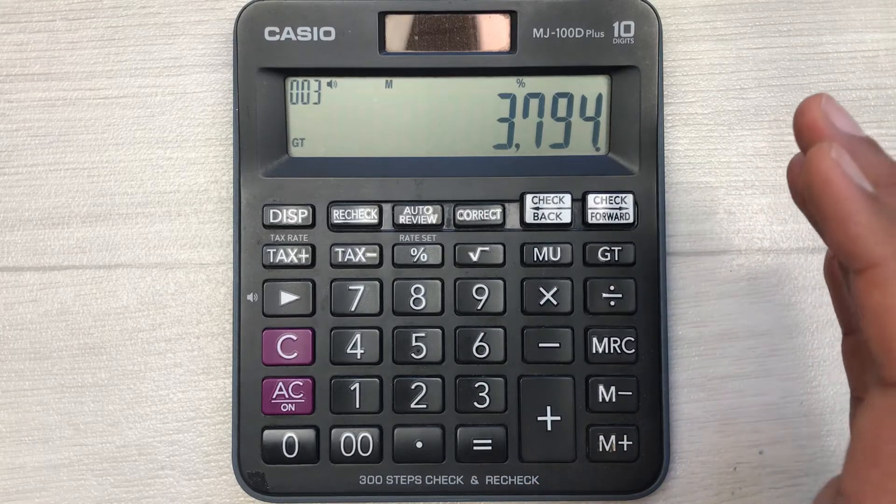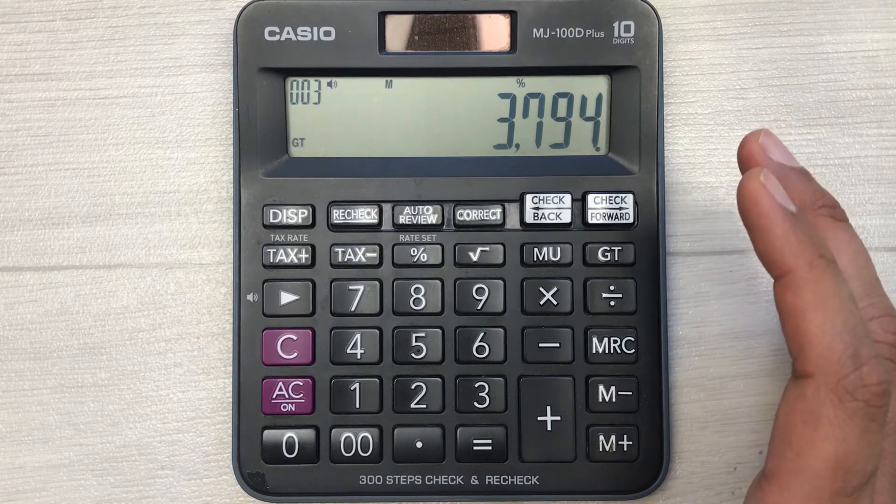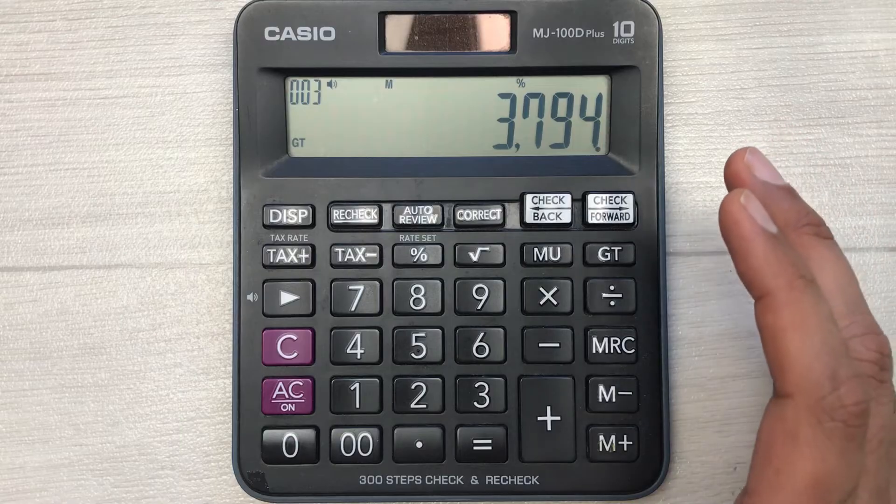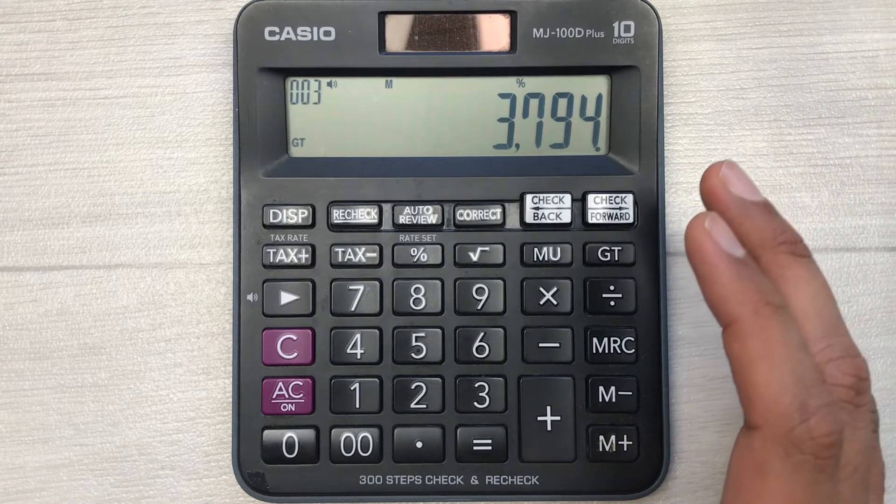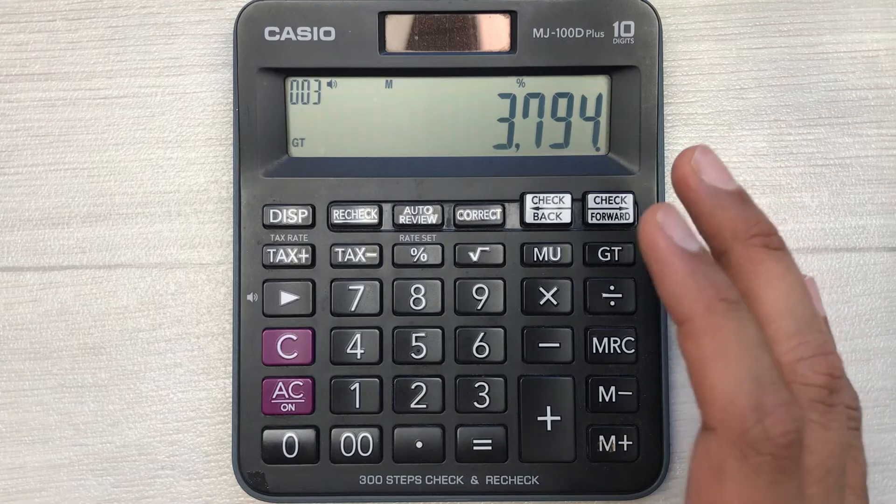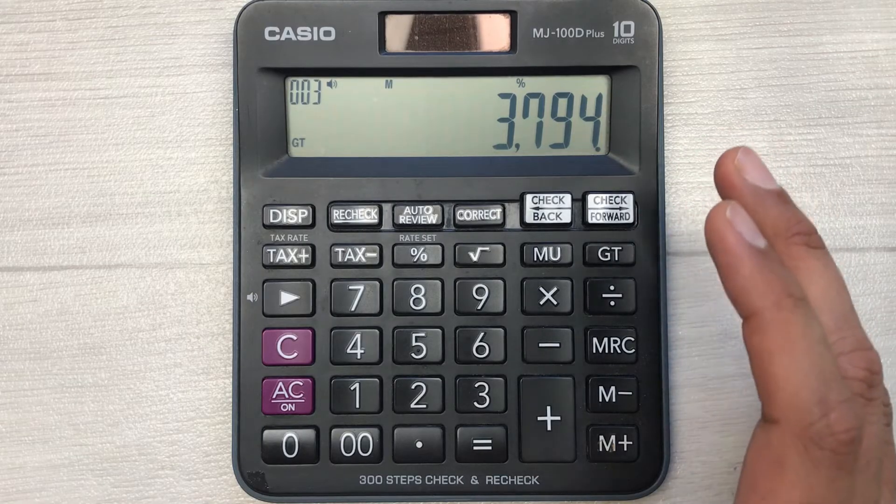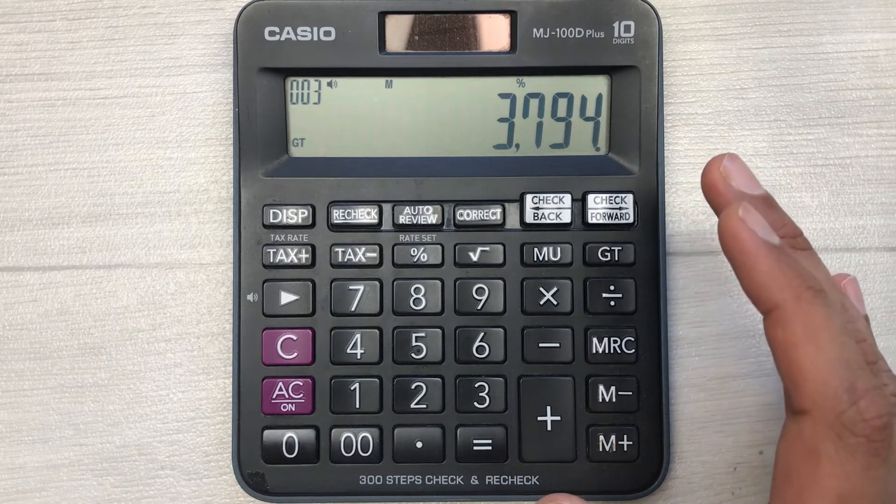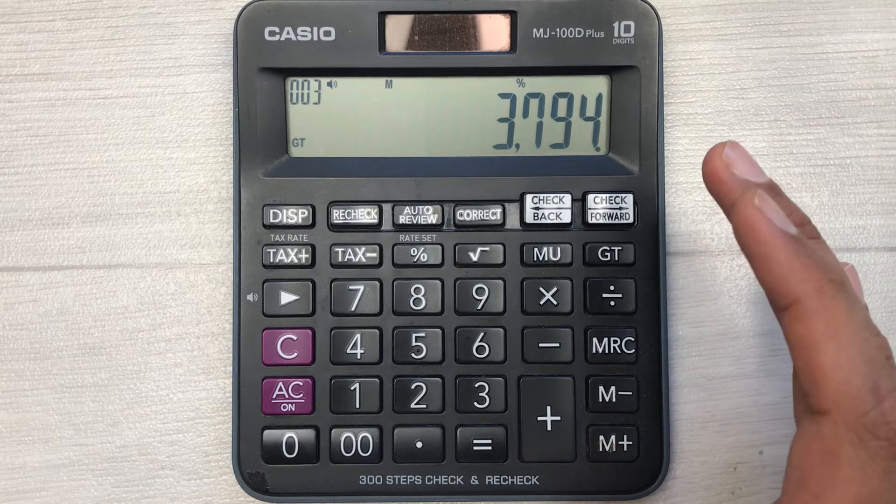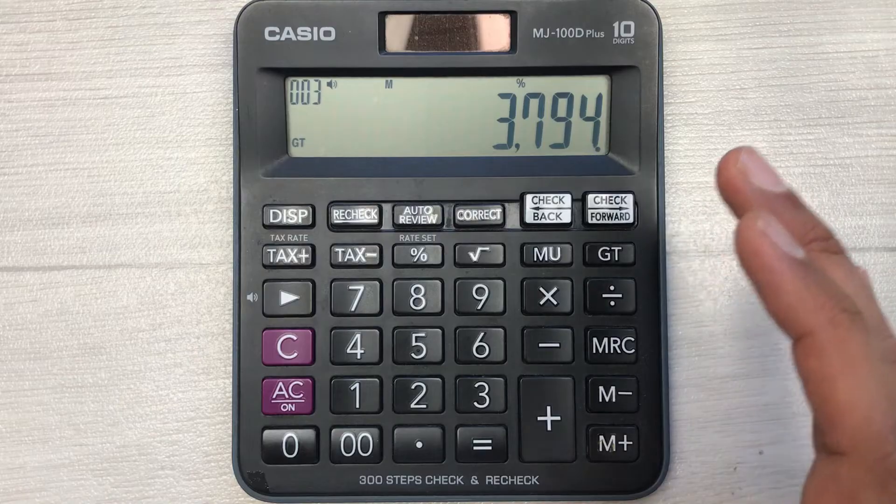Why did I multiply it with 70? Because the total percentage is 100 and you get a discount of 30%, so 100 minus 30 equals 70. That is why I directly multiply it with 70% to get my final answer.